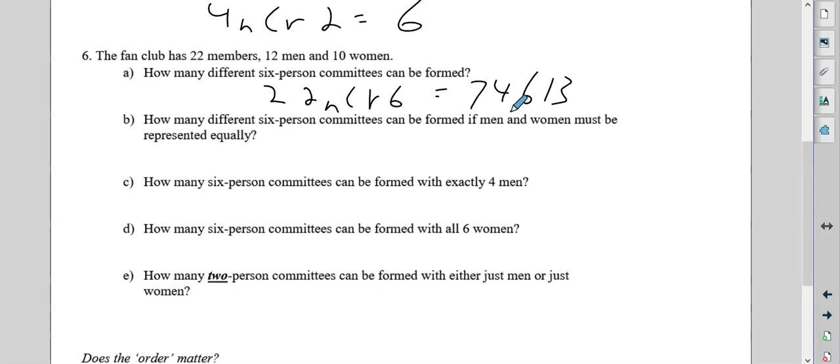Now, how many different six-person committees can be formed if men and women must be equal? Well, in this case, we know there's 12 men and there's 10 women. If it's going to be equal, that means we're doing three of each. Now remember, we had this with permutations. If you're doing permutation or combination on one group and another one, and you're trying to find the total, you're going to multiply these numbers. So this first one is going to give you 220, and the second one is going to give you 120. And when you multiply those, you're going to get 26,400.